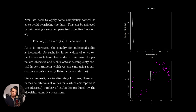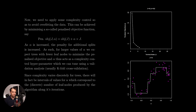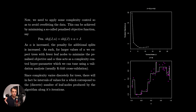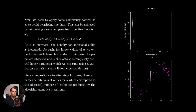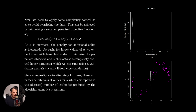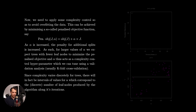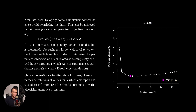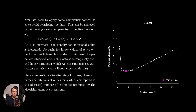This can be achieved by minimizing a so-called penalized objective function, which usually consists of taking the original objective function and then adding some penalty term to it. In the case of tree-based models, this is achieved by adding a simple penalty of alpha times j to the original objective function, where j is the number of leaf nodes.